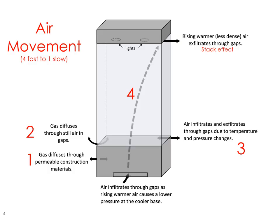Here is the physics of air movement, going from the fastest to the slowest. Number four, the fastest, is a kind of stack effect: air infiltrates through gaps as rising warmer air causes lower pressure at the cooler base, and air gets out on the top where the rising warmer, less dense air infiltrates through the gaps. Number three is when you have important fluctuations of temperature and pressure change that force air to get in and out. Number two is when you don't have much pressure change and gas diffuses through still air in gaps. Number one is gas diffusion through permeable construction material.